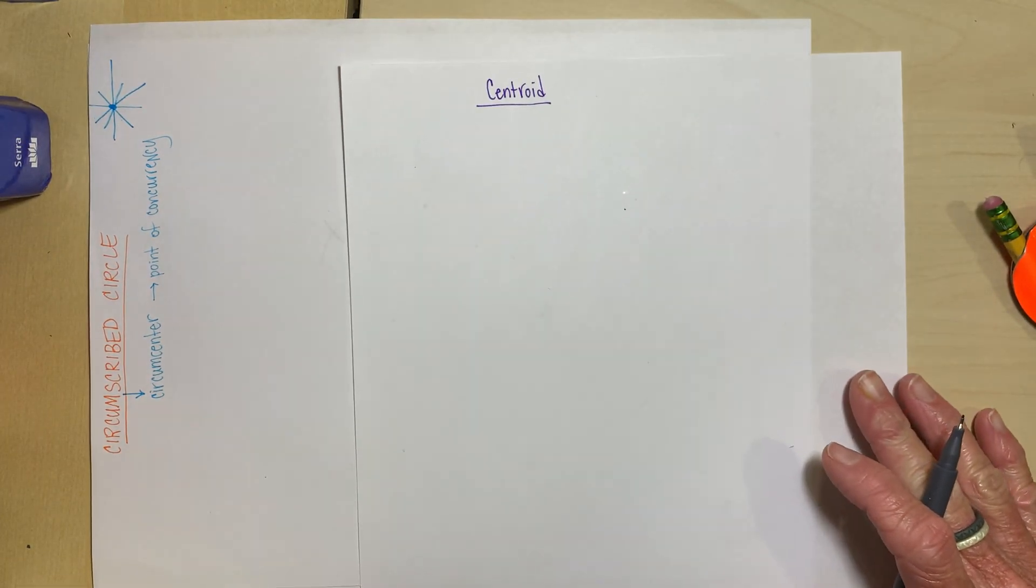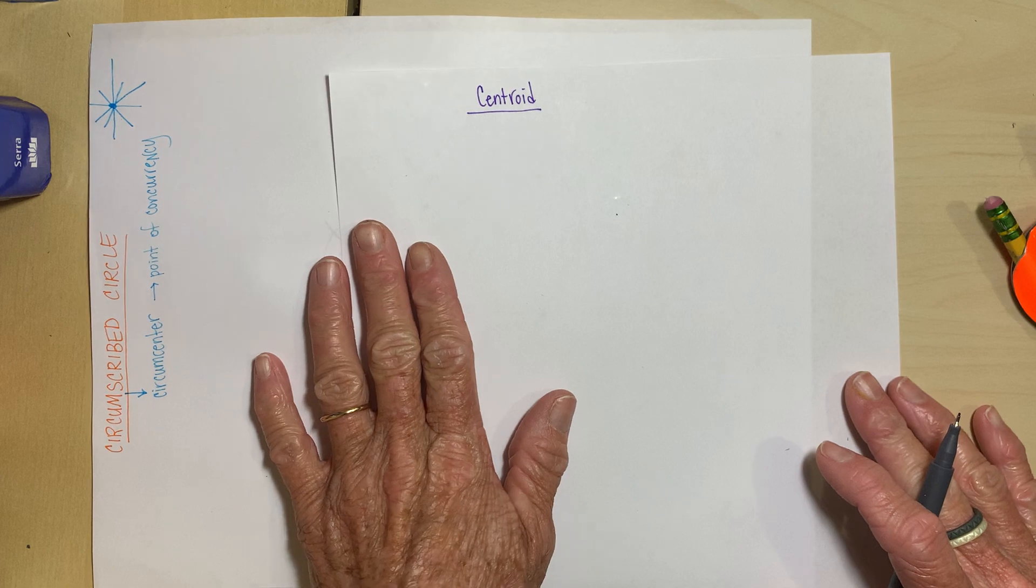All right, our third point of concurrency is called the centroid.